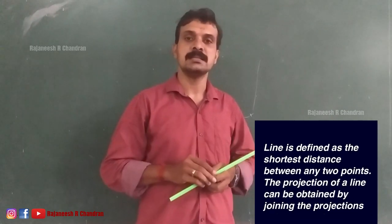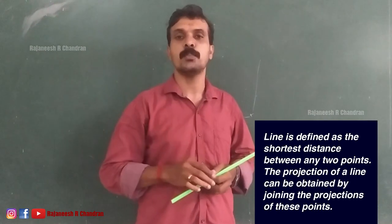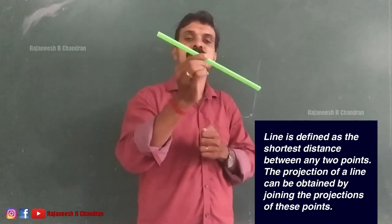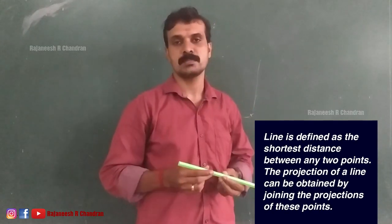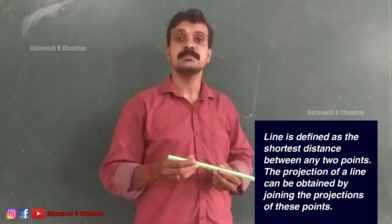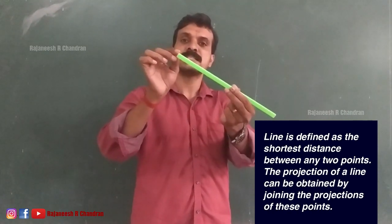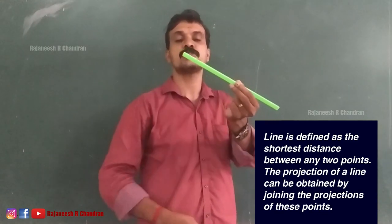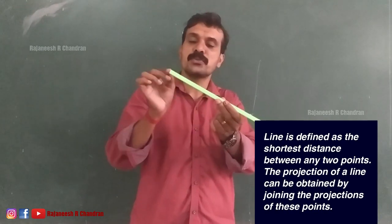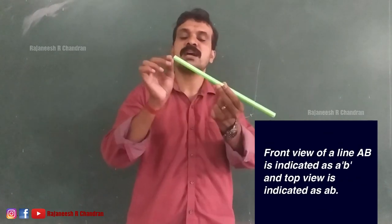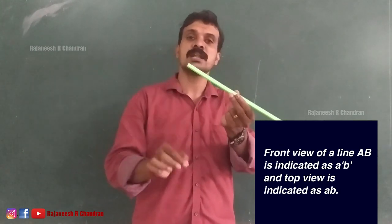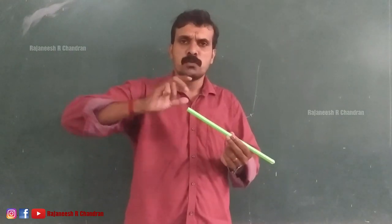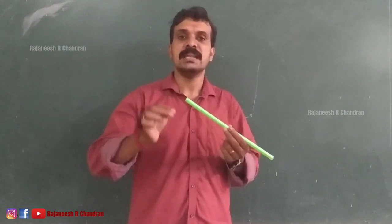So what is a line? A line is the shortest distance between two points. If we have two points, the locus connecting them is the line. What will be the projection of a line? Each endpoint has two projections — a front view and a top view. The projection of the line is obtained by connecting the front views of the endpoints to get the front view of the line, and connecting the top views of the endpoints to get the top view of the line.